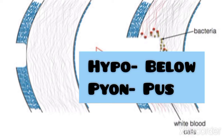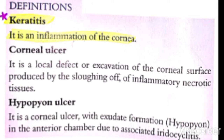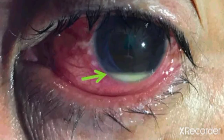Next we have the hypopion ulcer. What is hypopion? 'Hypo' means below, and 'pion' means pus - so pus is sitting below. When we see a corneal ulcer, there is an anterior chamber - the space between the cornea and the iris region. The pus settles under the anterior chamber due to gravity. This is called hypopion, as you can see in this figure - the white color area indicated by the arrow is pus sitting in the anterior chamber.